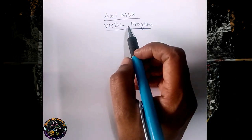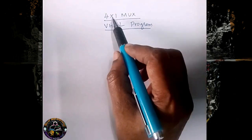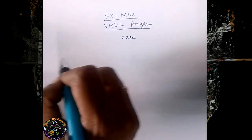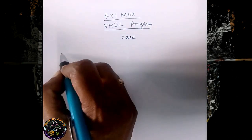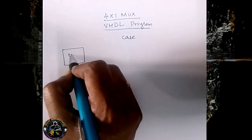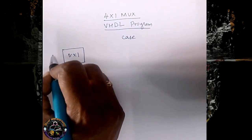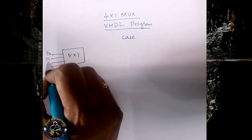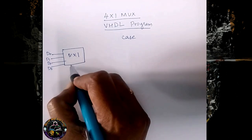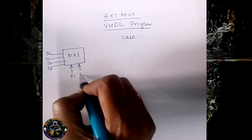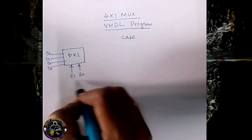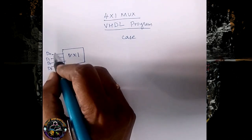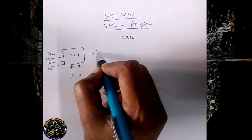In this video we are going to see how to write a VHDL program for a 4-to-1 multiplexer using a case statement. Before writing the program, we have to know what is meant by a 4-to-1 mux. A 4-to-1 mux consists of 4 inputs: D0, D1, D2 and D3, and 2 selection lines S1 and S0. Depending upon these, we can select any one of the data inputs as the output.